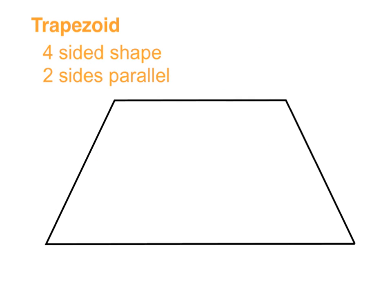Now let's look at what makes a trapezoid a trapezoid. Clearly it's got four sides, which makes it a quadrilateral. But what really makes it a trapezoid is that it has two sides that are parallel to each other — the top line and the bottom line are parallel, meaning they are going in the same direction. The two sides that connect the top and the bottom don't have to be equal to each other, but this one is an isosceles trapezoid, so it's a little more special.